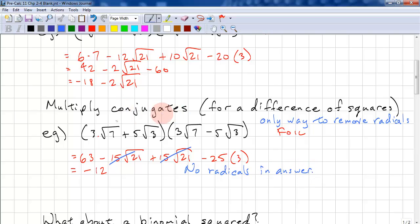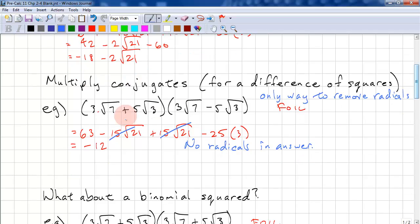Okay, so conjugates are an important concept. The conjugate has the same first term and the same second term. The only difference is the second term differs by a sign. So if it's positive here, this would be negative. If it's a negative here, we make it positive here. And that's how we get our conjugate.